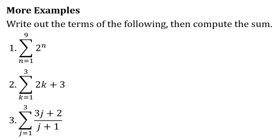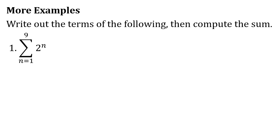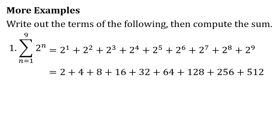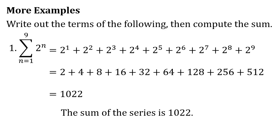Let's have more examples — write out the terms of the following, then compute the sum. First, the sum of 2 raised to n as n goes from 1 to 9. That's 2¹ plus 2² plus 2³ plus 2⁴ plus 2⁵ plus 2⁶ plus 2⁷ plus 2⁸ plus 2⁹, which equals 2 plus 4 plus 8 plus 16 plus 32 plus 64 plus 128 plus 256 plus 512. The total is 1022.